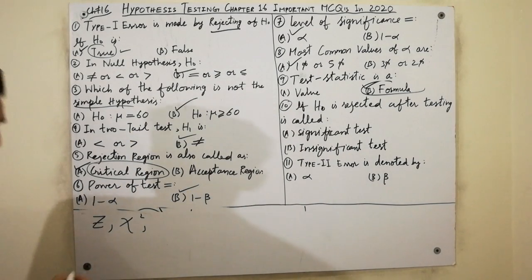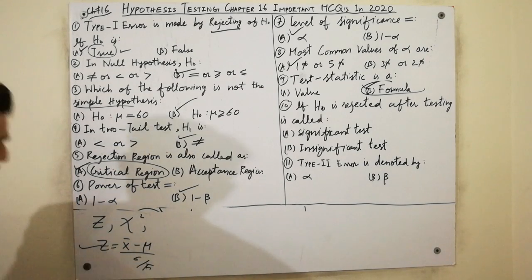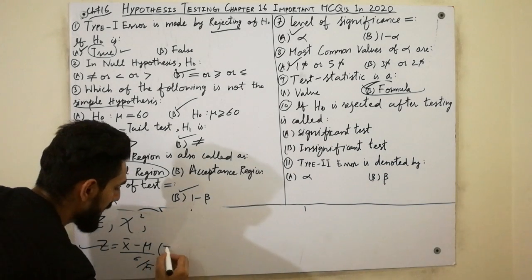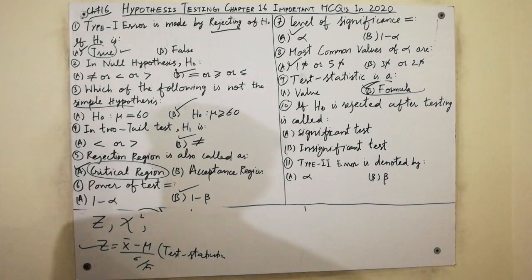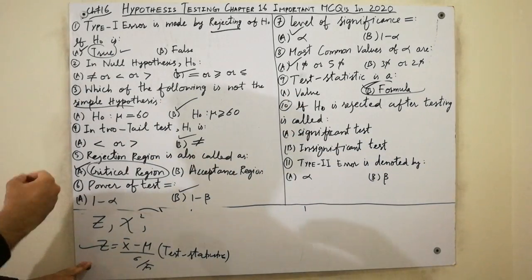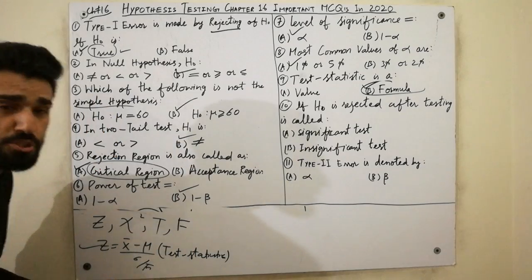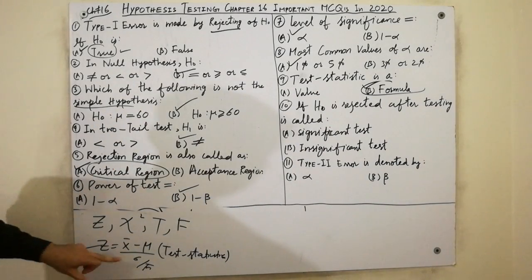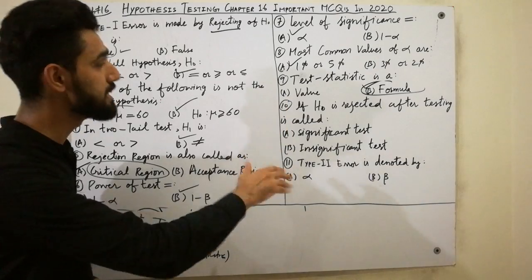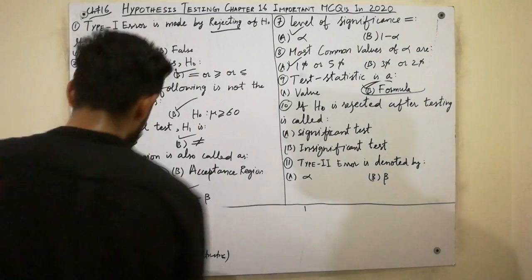A test statistic is a formula used to calculate a value for hypothesis testing. For example, z equals x-bar minus mu over sigma divided by the square root of n. Test statistics include formulas for z, chi-square, t-distribution, and f-distribution. Any formula used for testing is called a test statistic, and from it we calculate the calculated value.